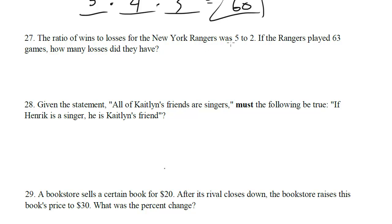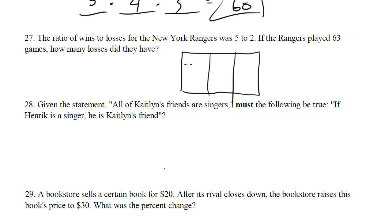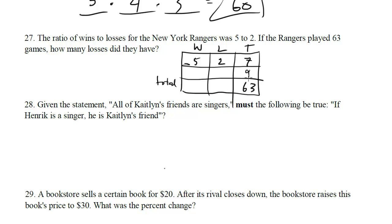Question 27: The ratio of wins to losses for the New York Rangers was 5 to 2. If the Rangers played 63 games, how many losses did they have? This one is best solved with the ratio box. Wins, losses, total — the ratio is 5 to 2, so the total ratio is 7. With 63 total games, we ask: what times 7 gives us 63? That's 9. So the same multiplier applies: wins = 45, losses = 18. The answer is 18. If you don't know the ratio box, check out the Math Bootcamp video on ratio boxes and the tactics videos on ratios.